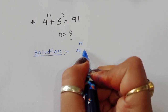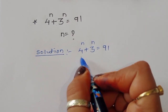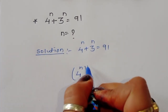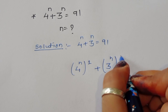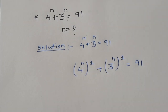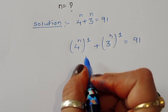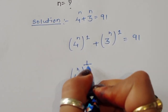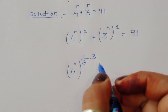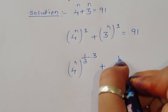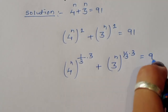4 power n plus 3 power n is equal to 91. We can write this as 4 power n times power 1, where the value is the same, plus 3 power n times power 1 is equal to 91. In place of 1 we can write 1 upon 3 times 3, so 3 is cancelled, leaving 1 upon 3 times 3 on each term, giving us the same value equal to 91.